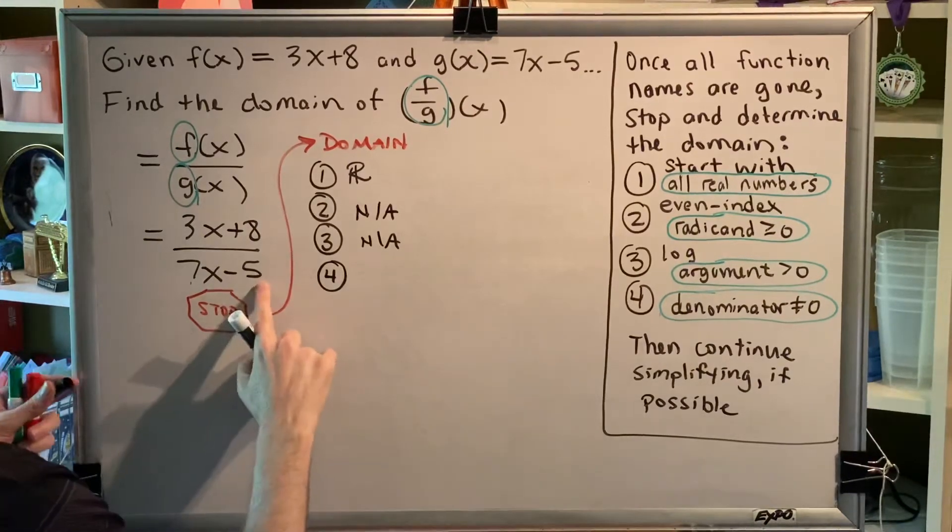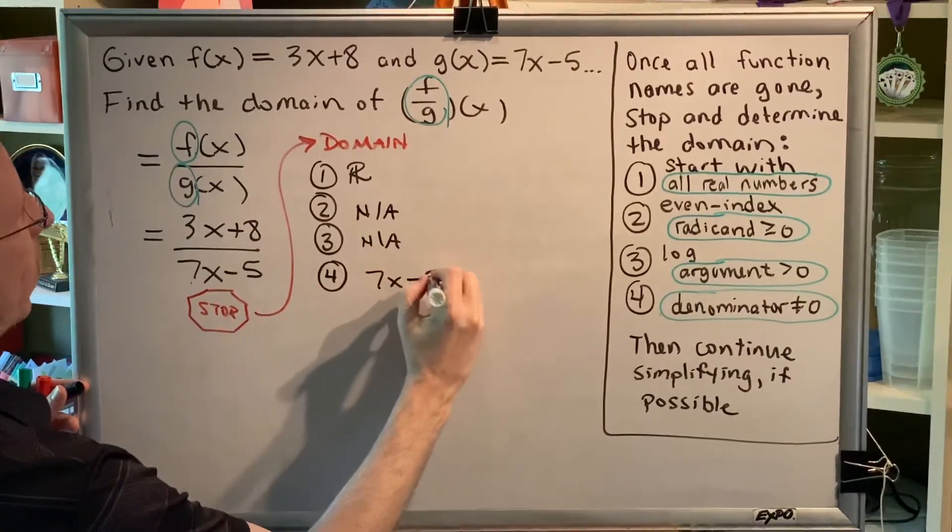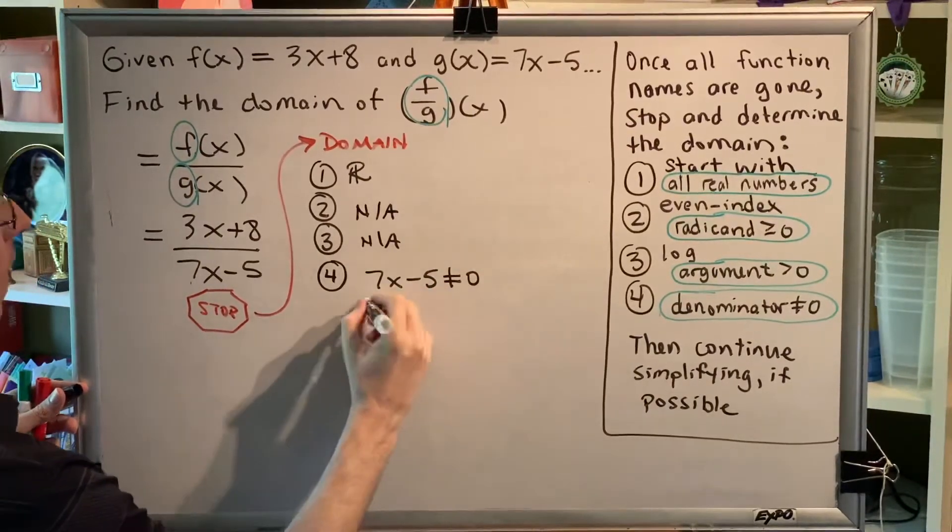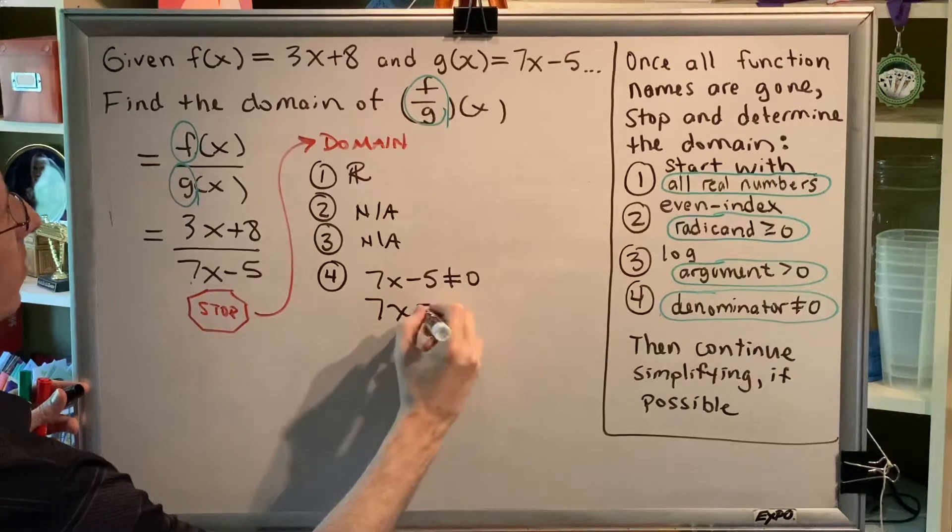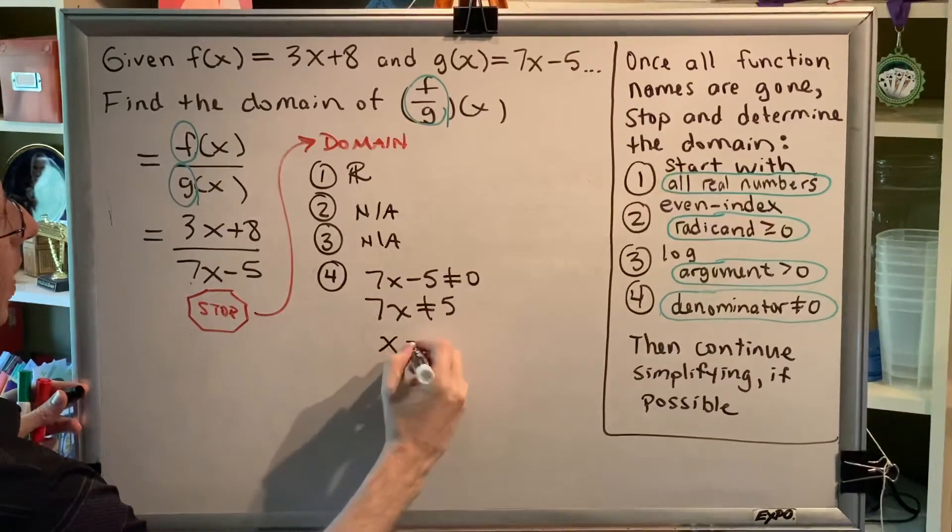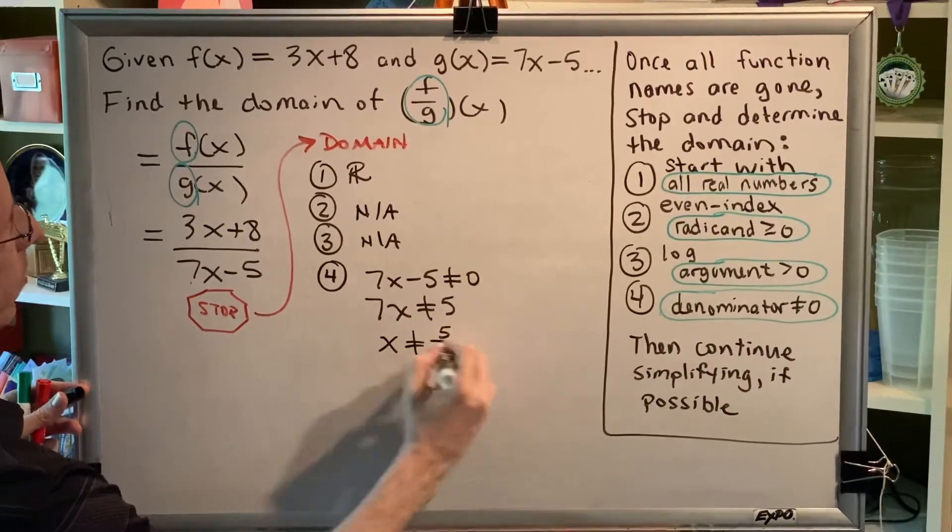Ah, here's where we're going to do something. We have a denominator, so 7x minus 5 is not allowed to be 0. Adding 5 to both sides, we get 7x is not allowed to be 5. Dividing by 7 on both sides, we get x is not allowed to be 5 sevenths.